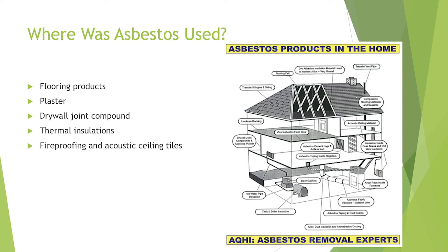Asbestos is dangerous due to the way the fibers break down — the diameter of the fiber continues to break into smaller sizes, which means it can get into the lower parts of the lung quite easily. When those particulates get into the lower areas of the lung, they form what's called fibrosis — scarring of the lung — which reduces the amount of oxygen you can transport to your blood. Asbestos was used in flooring products, plaster, drywall joint compound, thermal insulators, fireproofing, acoustic ceiling tiles, and many other locations.